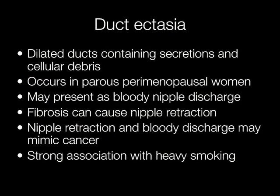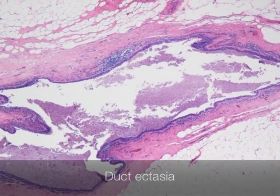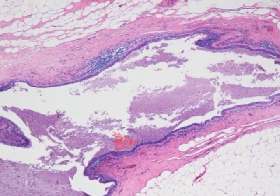Ductectasia is dilated ducts containing secretions and cellular debris. It occurs in perimenopausal women and may present as bloody nipple discharge. The fibrosis can cause nipple retraction, and this together with the discharge may mimic cancer. There is a strong association with heavy smoking. This dilated duct containing debris is an example of ductectasia.